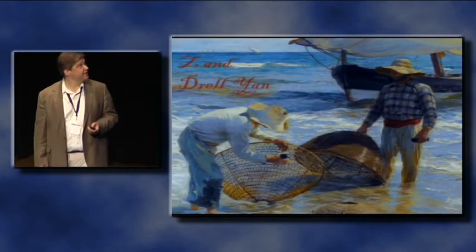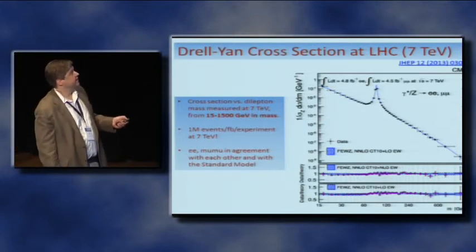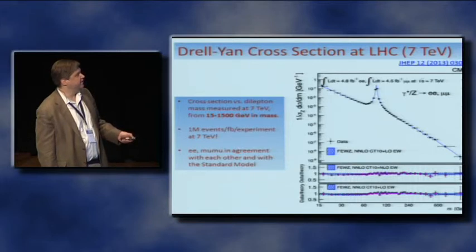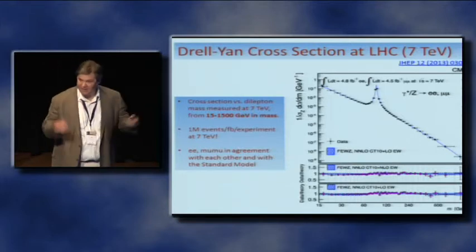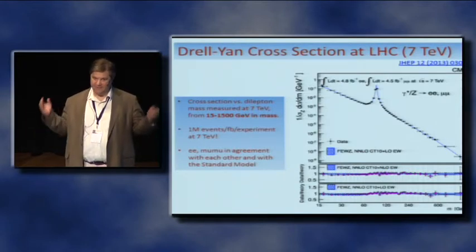Moving on to Z and Drell-Yan physics, there's been a lot of progress at the LHC. Both CMS and ATLAS have measured the 7 TeV cross-section as a function of mass, ranging from 15 all the way to 1,500 GeV in lepton-pair mass. CMS and ATLAS currently have more lepton pairs from Z bosons than the entire LEP plus SLD sample — some 20 million per experiment. With that kind of precision, we obtain excellent agreement with next-to-next-to-leading-order predictions over 10 decades in cross-section.